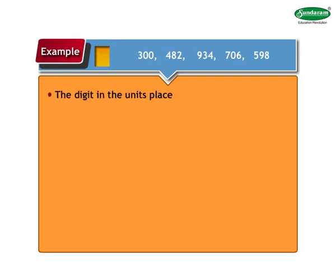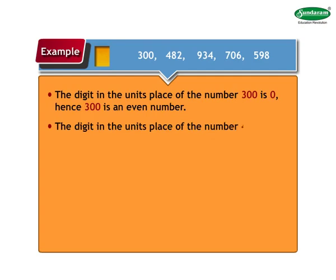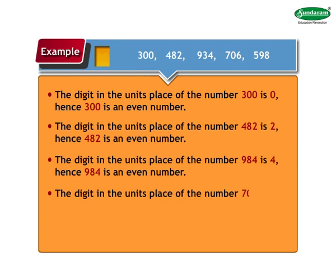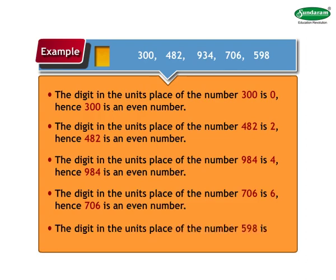The digit in the units place of 300 is 0, hence 300 is an even number. The digit in the units place of 482 is 2, hence 482 is an even number. The digit in the units place of 984 is 4, hence 984 is an even number. The digit in the units place of 706 is 6, hence 706 is an even number. The digit in the units place of 598 is 8, hence 598 is an even number. Children, isn't this very simple?